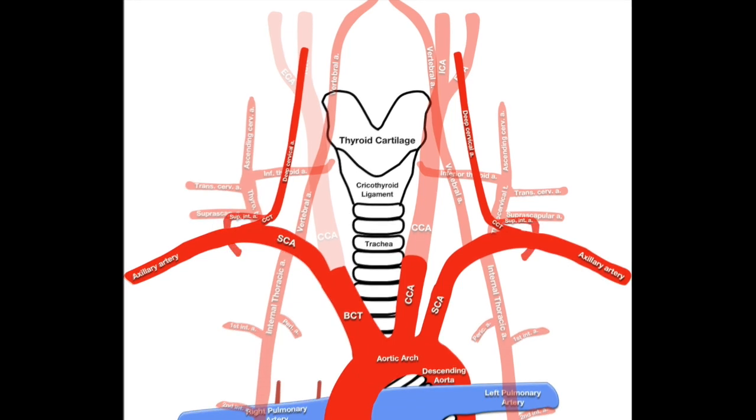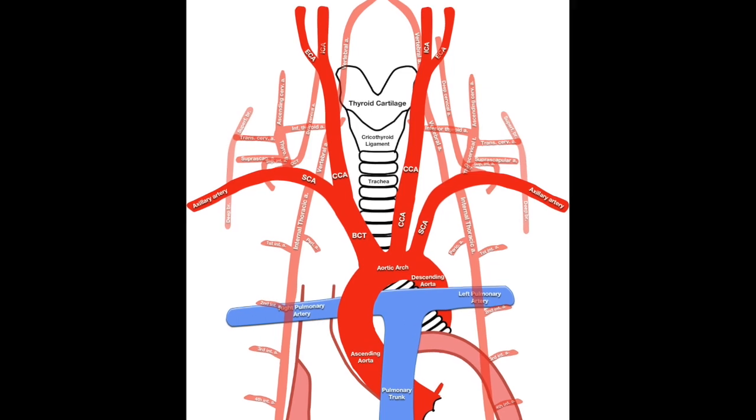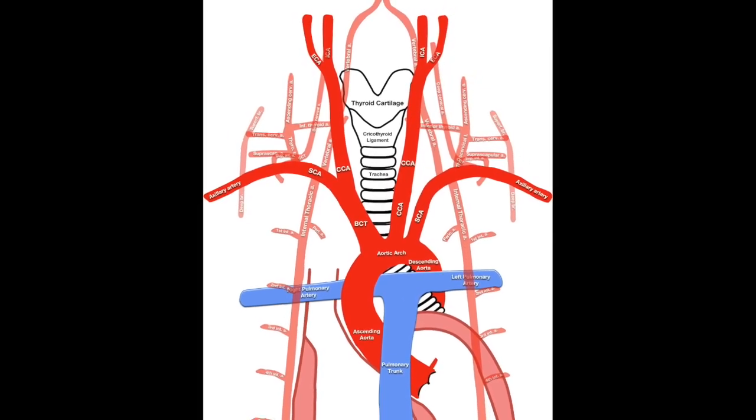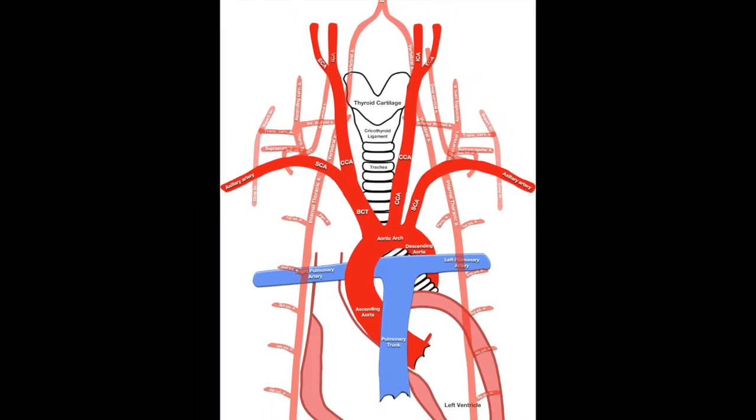The trunk also provides the superior intercostal artery which supplies the first two intercostal spaces posteriorly via a branch to each space. This concludes our podcast as we have covered the branching pattern of the aorta as well as the primary branches of the subclavian artery.